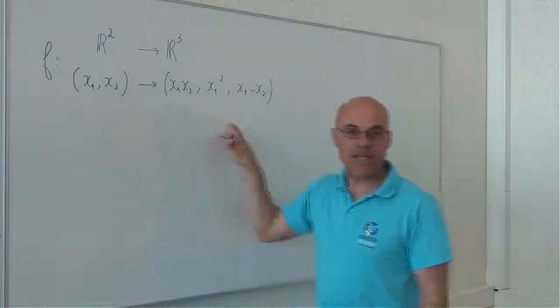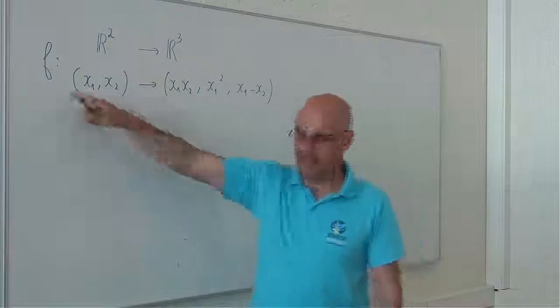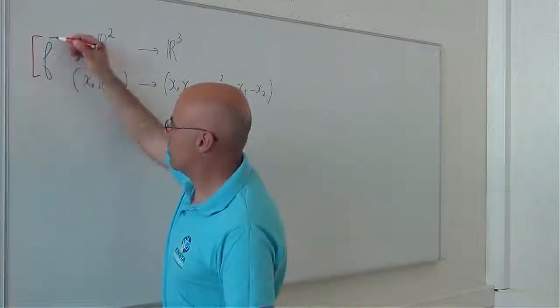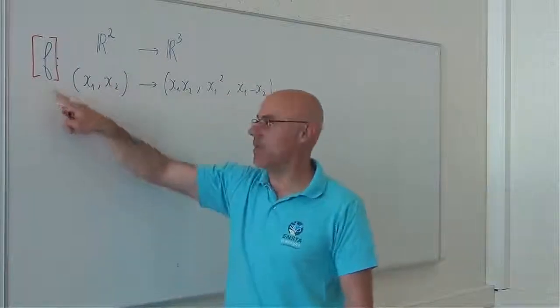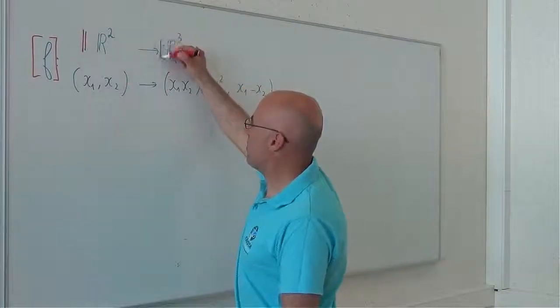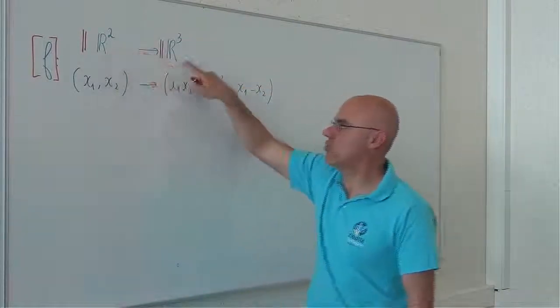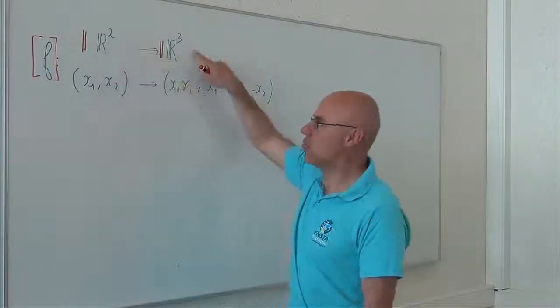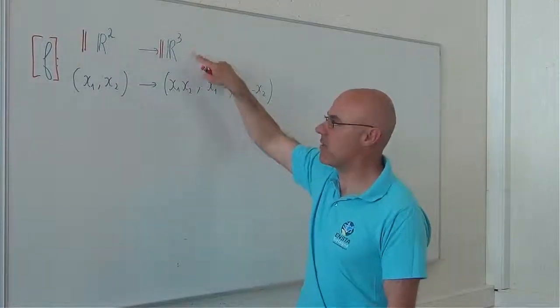How can we write the inclusion function for f? f becomes inclusion function, so I write it with brackets. Here, I go from IR2 to IR3, I mean from the set of boxes of R2 toward the set of boxes of R3.